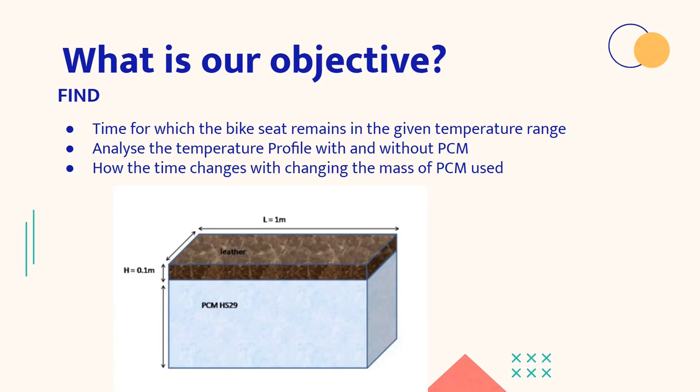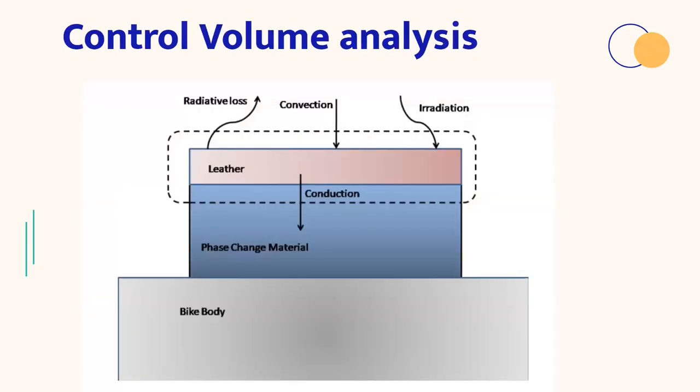So here is our control volume analysis and we will look at the modes of heat transfer also through this. So we have chosen our control volume to be surrounding the layer of leather and we have described the conduction, convection and the radiative losses. Firstly, the irradiation would occur from the sun to the leather, which would increase the temperature of the leather sheet. Then as the temperature of leather is increased, the conduction would occur from the leather to the phase change material to increase the temperature of the phase change material.